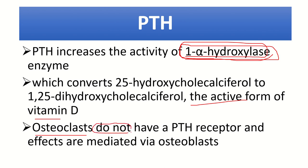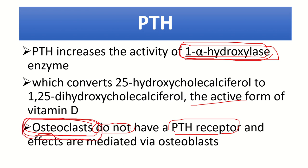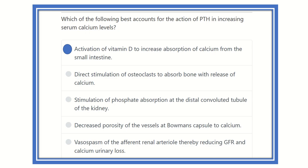A very important point: osteoclasts do not have PTH receptors. For bone resorption, osteoclasts must be activated, and this is only possible indirectly through parathyroid hormone. Since PTH has no receptor for osteoclast, it first binds with the osteoblast, and then the osteoblast activates the osteoclast.